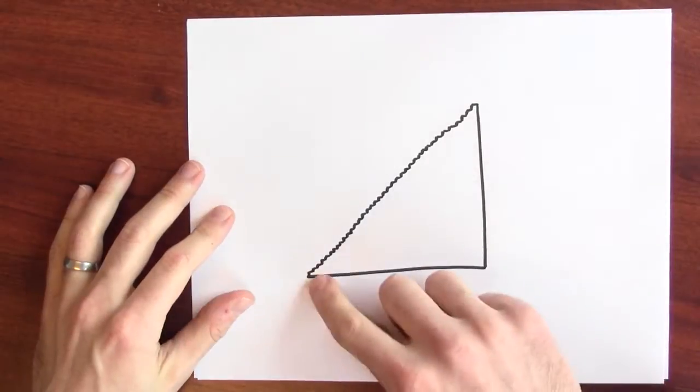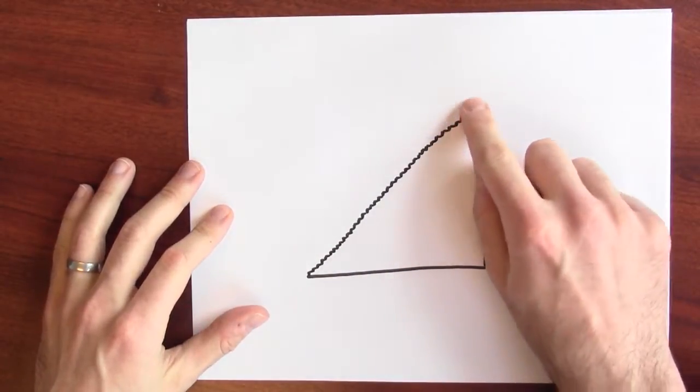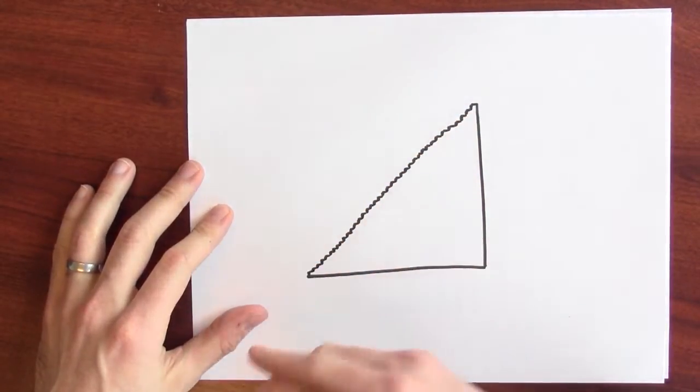What happens if I make those stairs really small? Well, even if the stairs are really, really small, the total length of the staircase is still 2. What is going on here? The length of the ramp is a square root of 2. The length of the staircase is 2. No matter how small I make the stairs, even if I made each stair the size of a proton, the staircase would still have length 2.